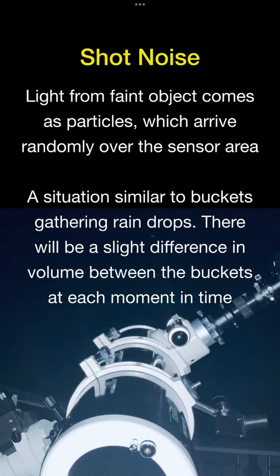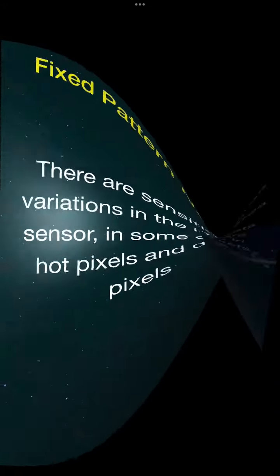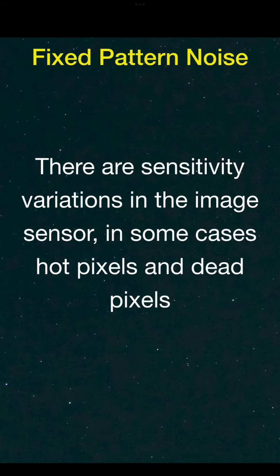Shot noise is a statistical variation of received signal over the image sensor due to the fact that the light particles arrive randomly. It is similar to water buckets collecting raindrops where the water volume will vary between buckets at each point in time. Fixed pattern noise is variation in sensitivity over pixels across the sensor area.